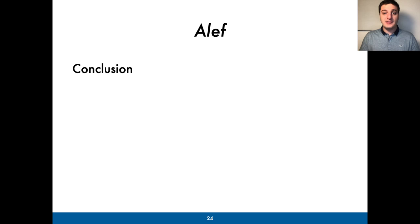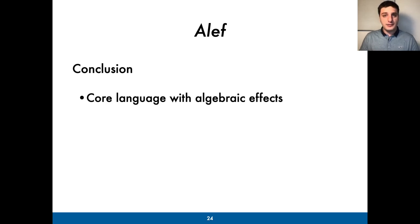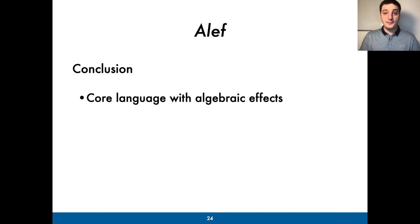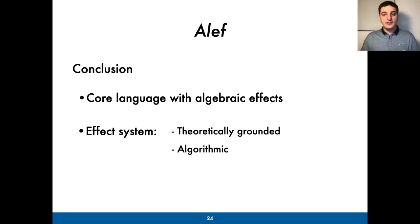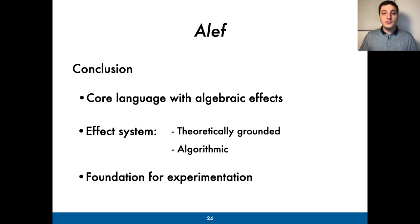To wrap things up, let me quickly summarize our work. We've introduced Aleph, a small basic calculus with algebraic effects and handlers. By adding effect rows to its types and applying a variation of bidirectional typing in which effect information can be synthesized, we managed to formulate a simple effect system that is both close to the underlying theoretical notions of algebraic effects and handlers, and has a direct implementation. For those reasons, we hope that Aleph can become a useful foundation for studying and experimenting with extensions to the algebraic effects approach. Thank you.